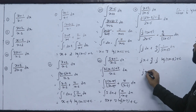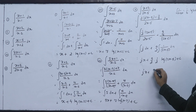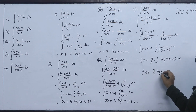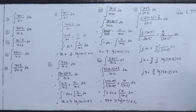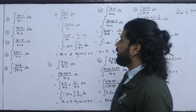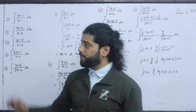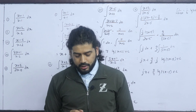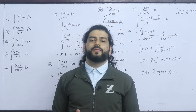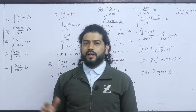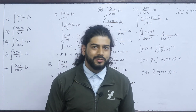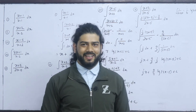The final answer is (1/2)x plus (9/4) log|2x-5| plus c, where c is the integrating constant. In the next class, we will cover more questions. Thanks for listening. Thank you.